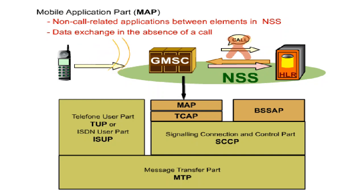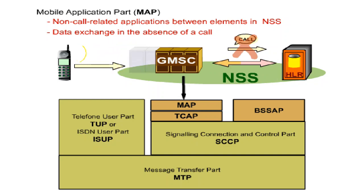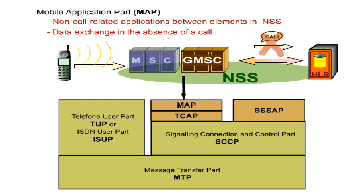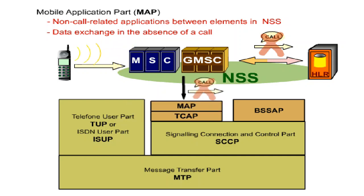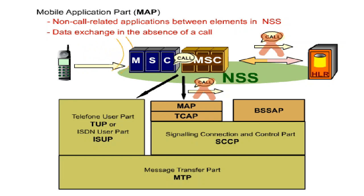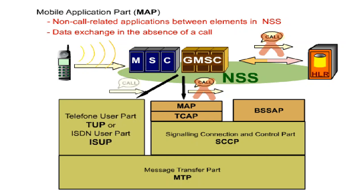Please note: in the MSC-to-MSC communication, MAP is only used for non-call-related signalling. To forward a call from an MSC to another MSC, TUP or ISUP is used.